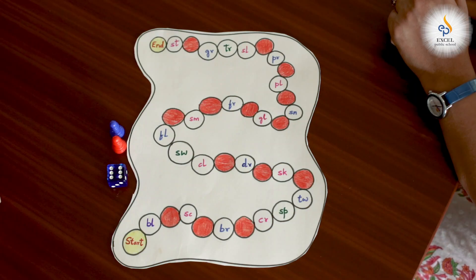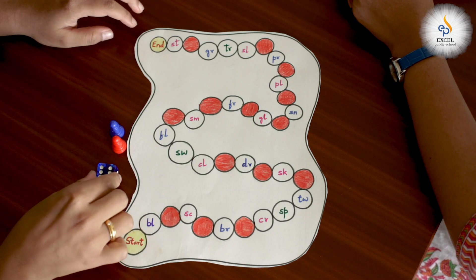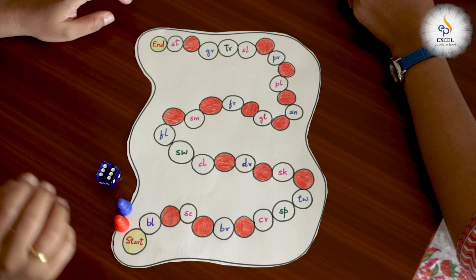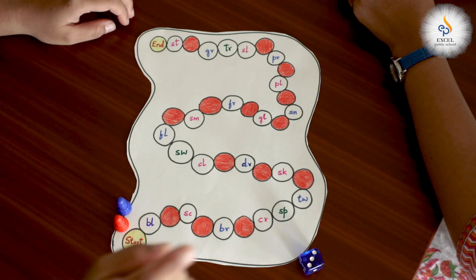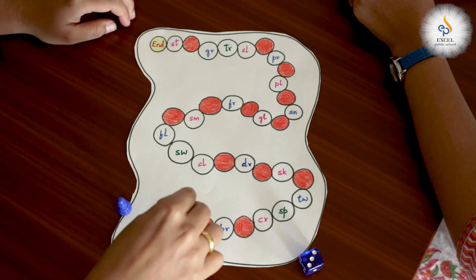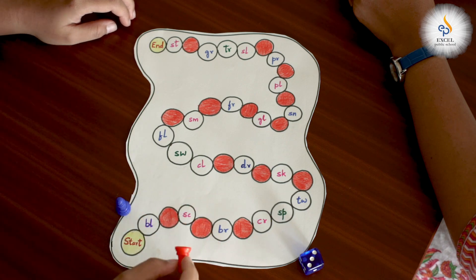Just like any board game, you'll need to create a board, a die and use pawns. The game is very simple. You roll a die, count the number on the die, move your pawn according to the number of dots, read the blend out loud and give out a word.